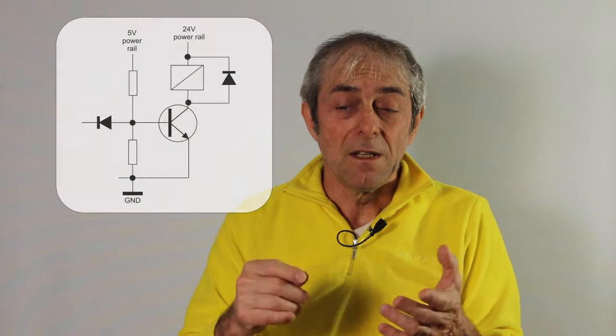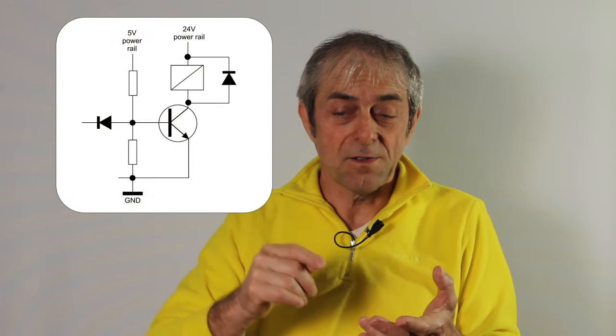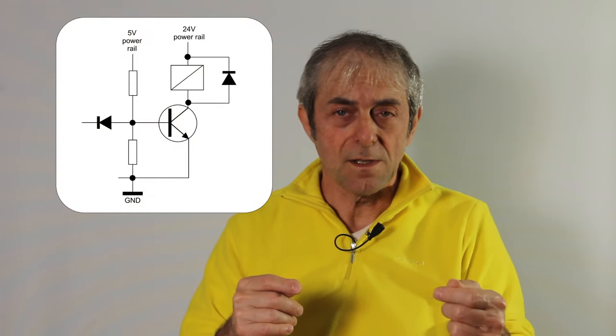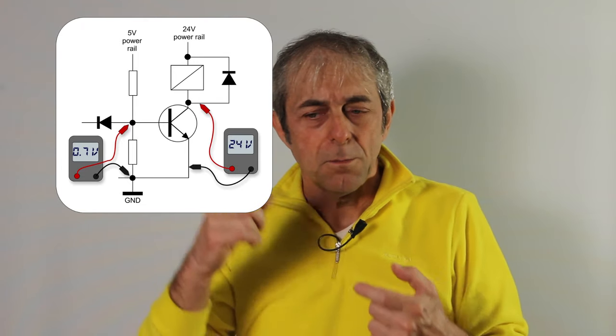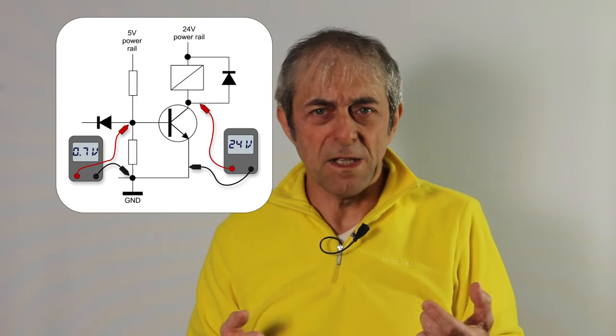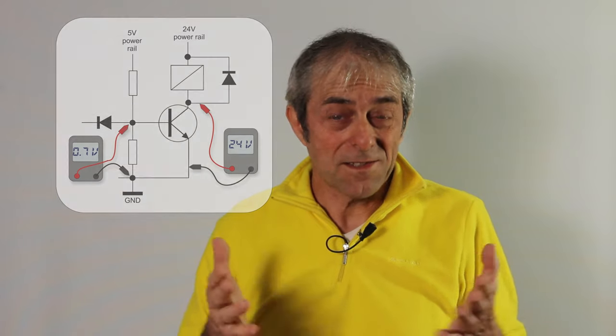And each component you meet along the path tells you if it's working properly given the surrounding conditions. Let's say, for example, you meet a transistor and you see a transistor that has some voltage in its base, but you see a large voltage between its collector and emitter. Clearly that transistor is not working properly. Something is going wrong there.